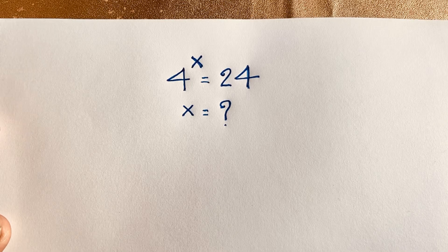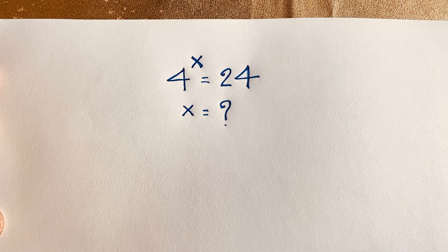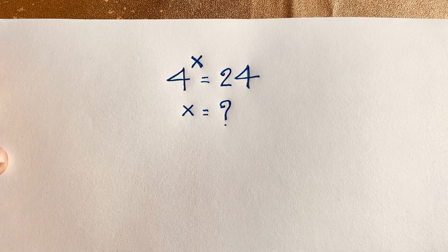Hello everyone. In this video, we have solved this interesting exponential equation. It is a junior maths Olympiad question. This question is 4 to the power of x is equal to 24. x is equal to what? How to solve this exponential equation?